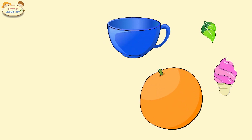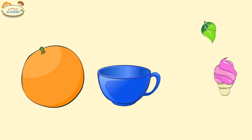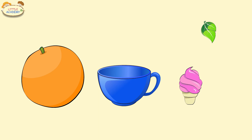Let's see which of these objects is smaller. One of these objects is the largest. That's right, the orange is the largest. Which object is smaller? Yes, the cup is smaller. Which object is even smaller? The ice cream is even smaller. And which one is the smallest? Yes, the leaf is the smallest.